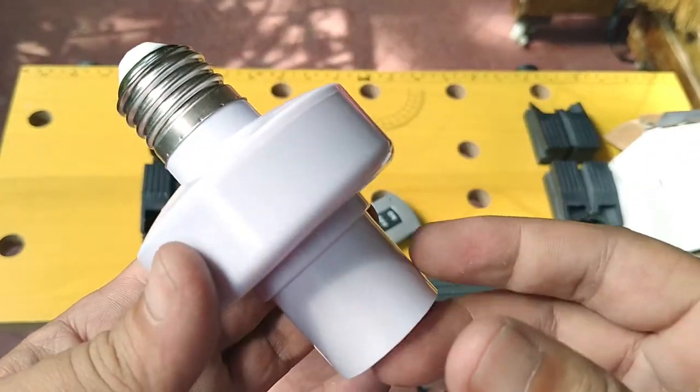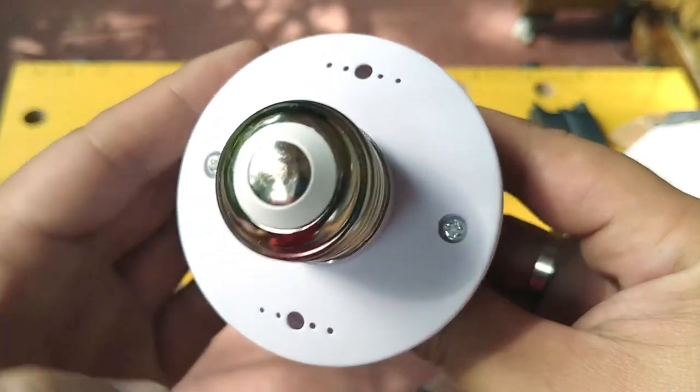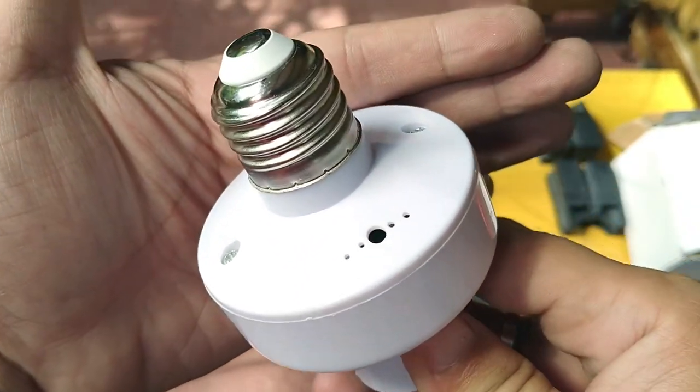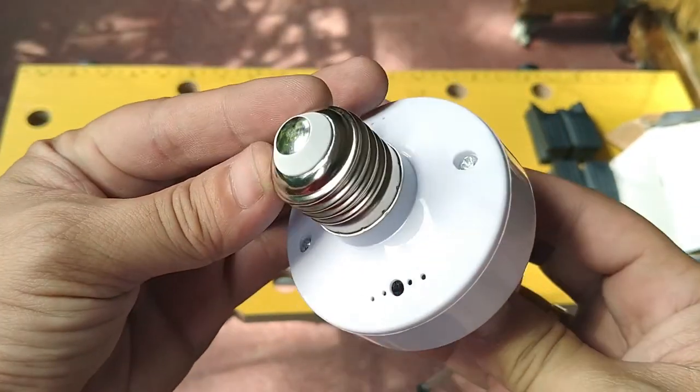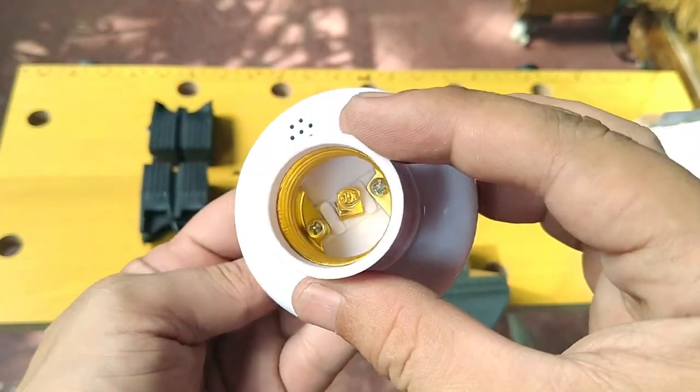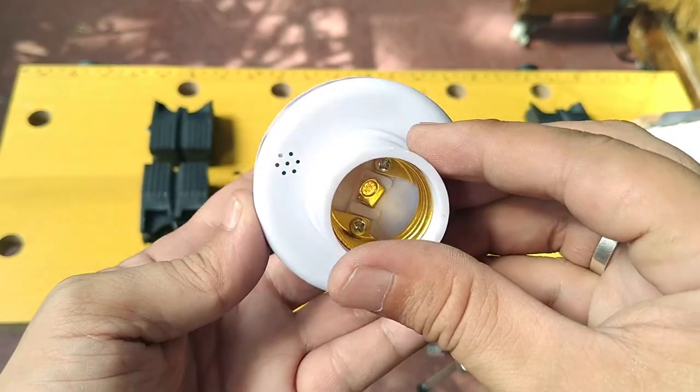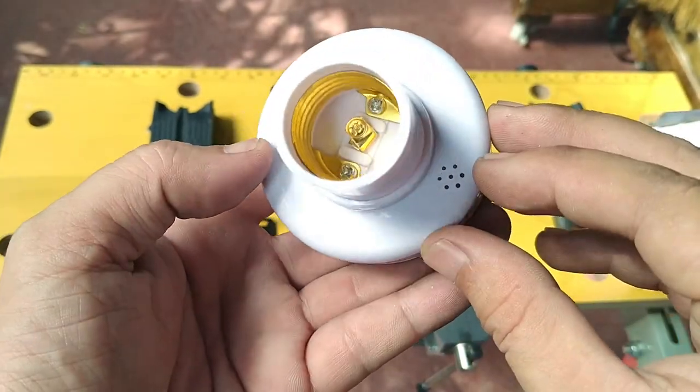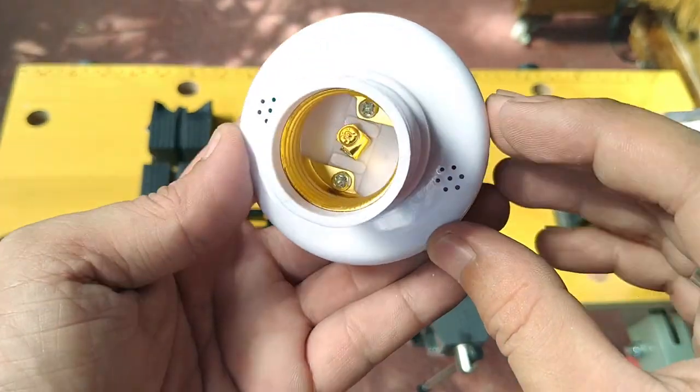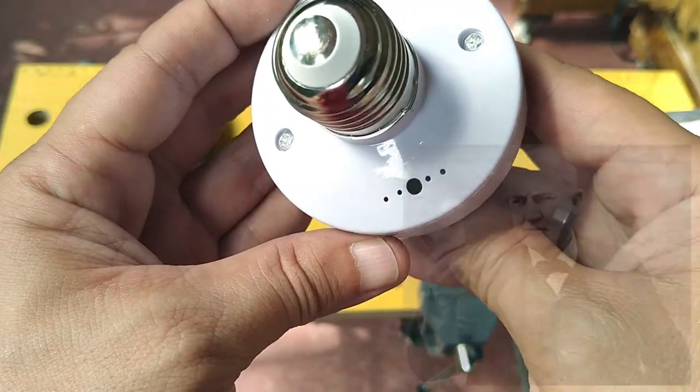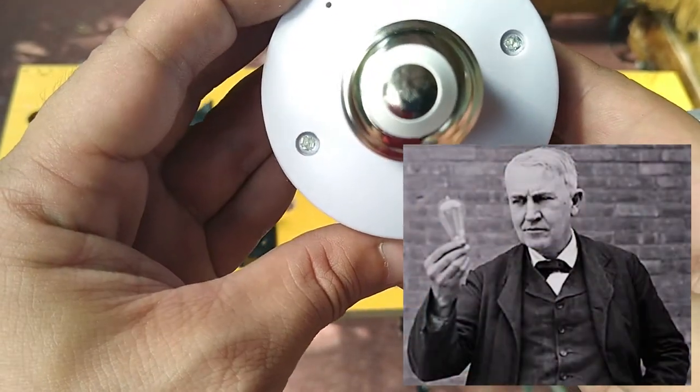This E27 socket switch is where the magic happens and is actually the one being controlled remotely to turn on or off. Oh, and in case you're curious, the standard in the US is E26, a millimeter smaller and designed for 110 volts. You might also be wondering what the E stands for. Edison, of course.